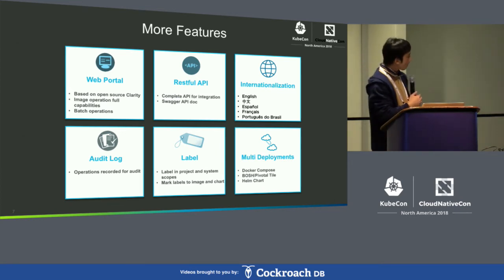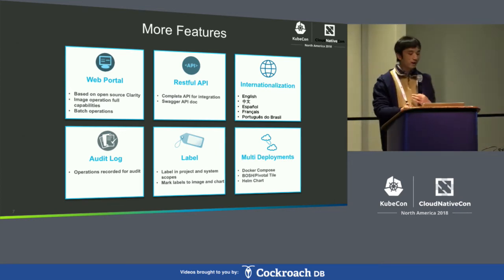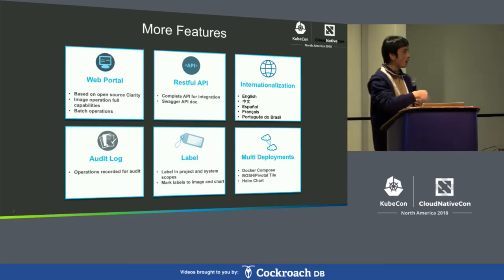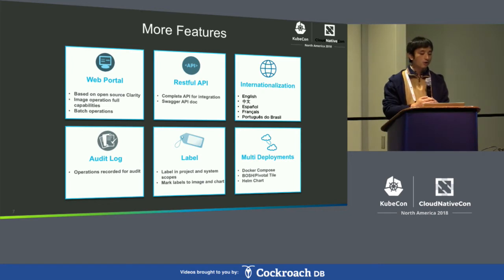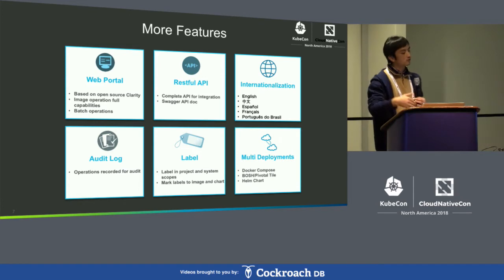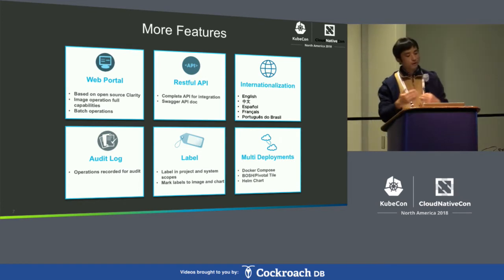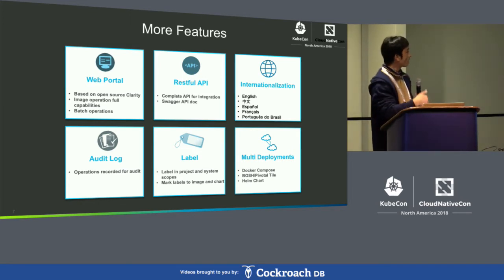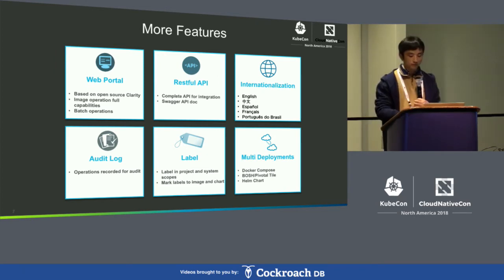We also support multiple deployment options. You can use Docker Compose to deploy Harbor in a standalone environment, Bosh to deploy Harbor to the Cloud Foundry ecosystem, and Harbor Helm Chart to deploy Harbor to the Kubernetes environment.